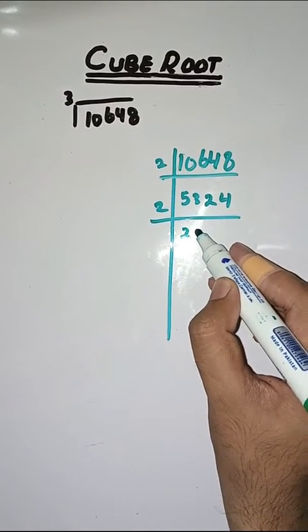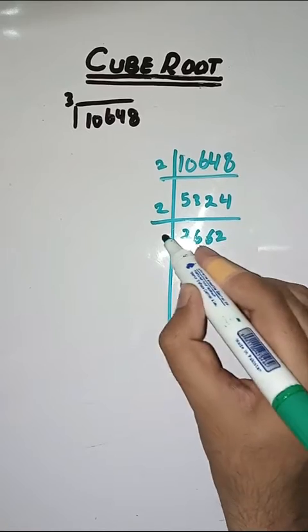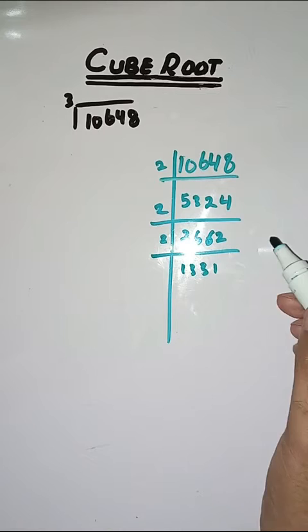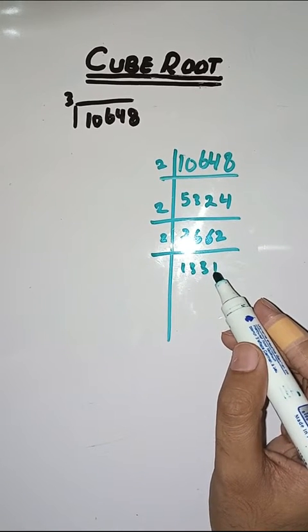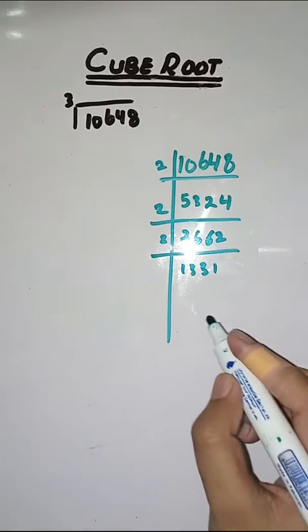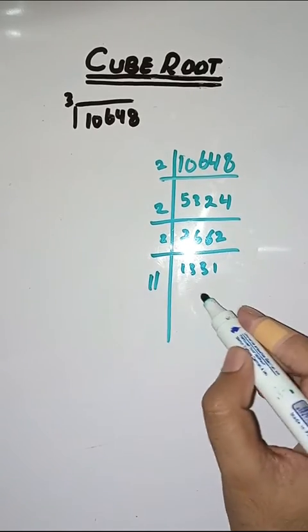Again with 2, 2 ones are 2, 2 threes are 6, 2 threes are 6, 2 ones are 2. Now with 11, 11 ones are 11, 11 twos are 22, 11 ones are 11.